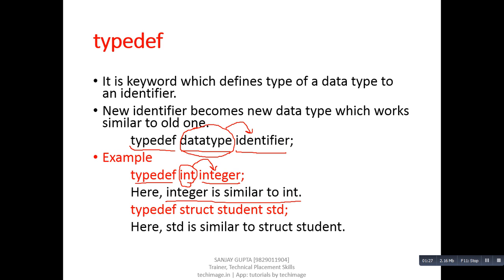The typedef keyword creates clones for old data types. Here is another example: typedef is defining the properties of data type struct student to an identifier which is STD. So STD is similar to struct student. We can create a variable either with the struct student data type or with STD, because STD is now a data type equivalent to struct student. So typedef creates new data types which have the properties of already implemented data types. Thank you.